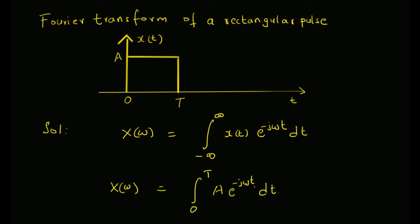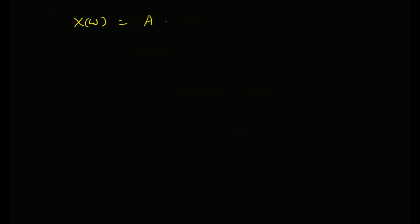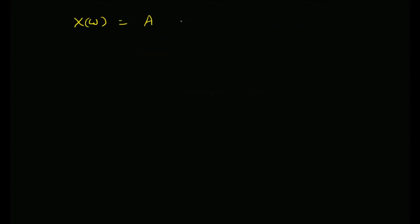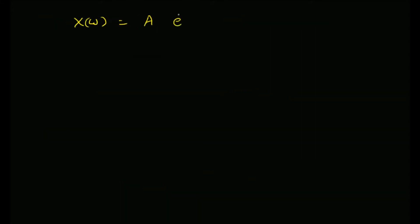We can easily evaluate this integral as follows. X(ω) is going to be equal to a multiplied by the integration of e^(−jωt) dt, which gives e^(−jωt) divided by (−jω), evaluated with limits 0 to T, where T is the length of the rectangular pulse.